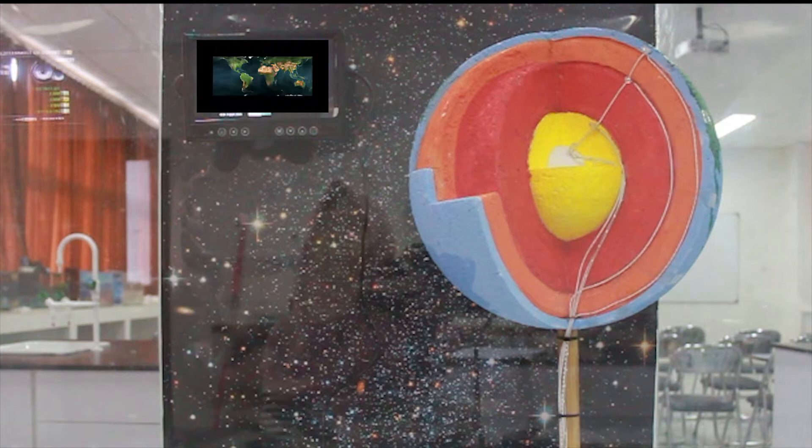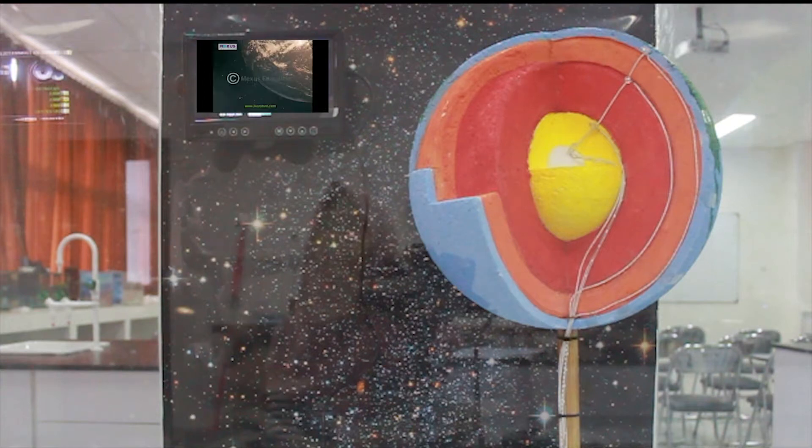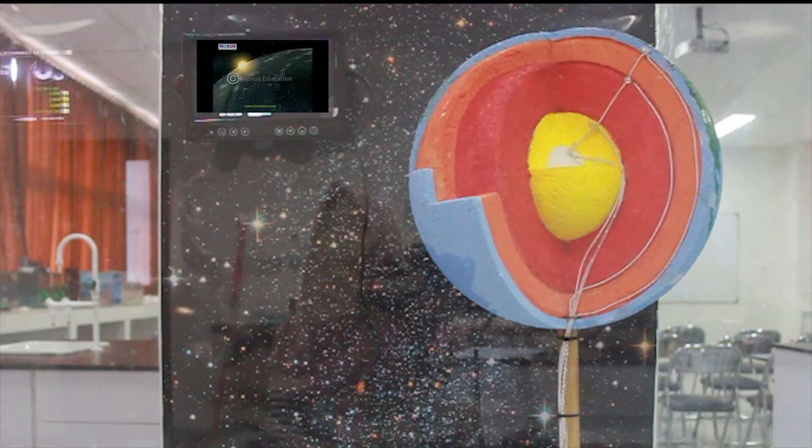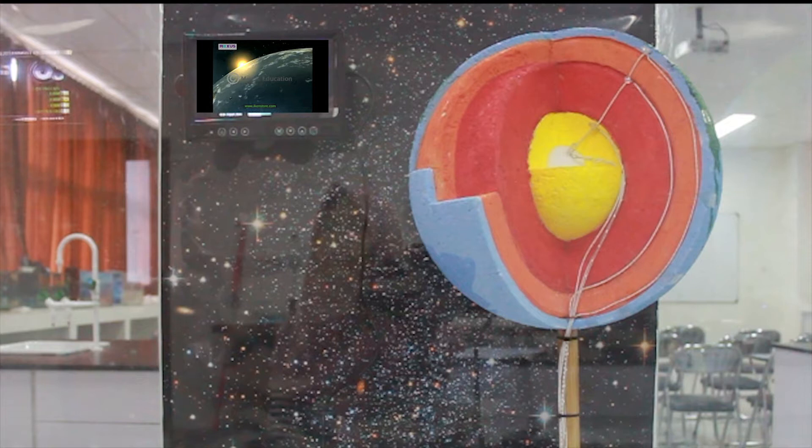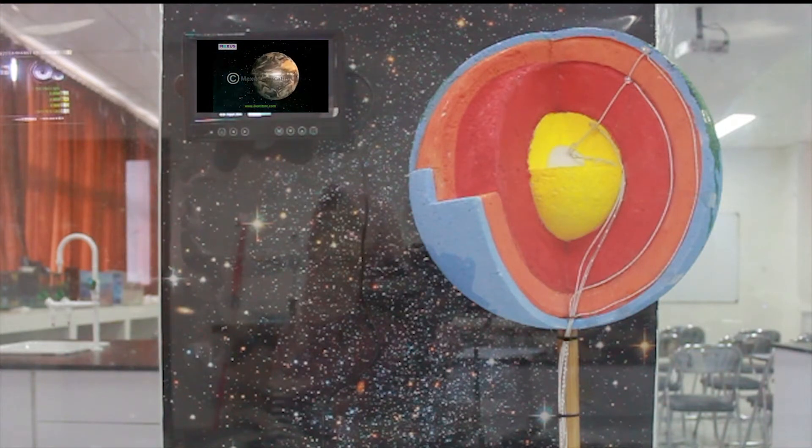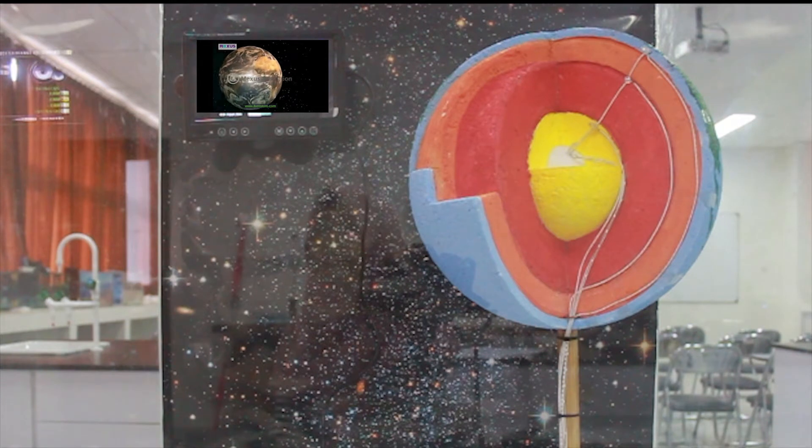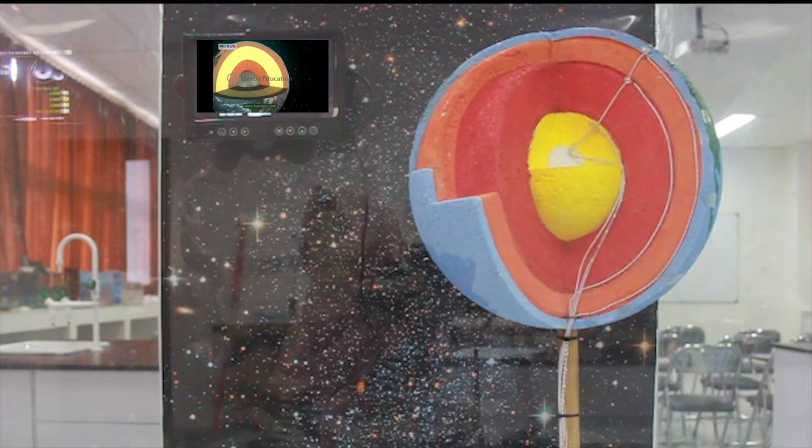Do you know that the Earth where we're living is not only land and water? The surface of the Earth is covered by rocks and water bodies. But what about the inside of the Earth? If we want to take a look at the Earth's interior, we will see that the Earth consists of four layers.